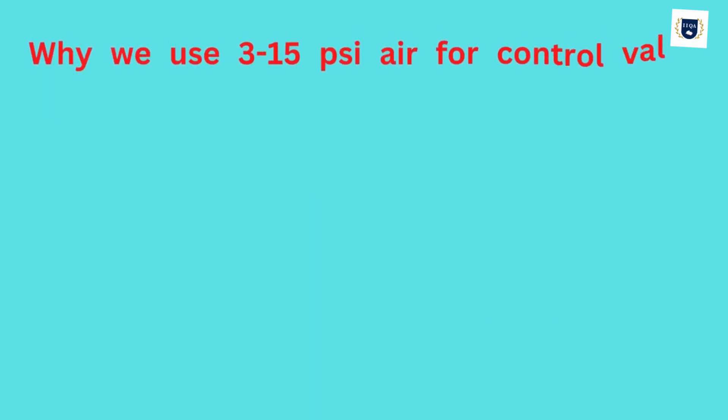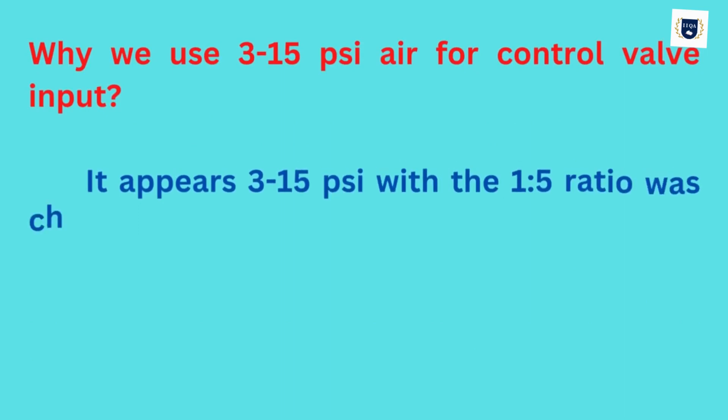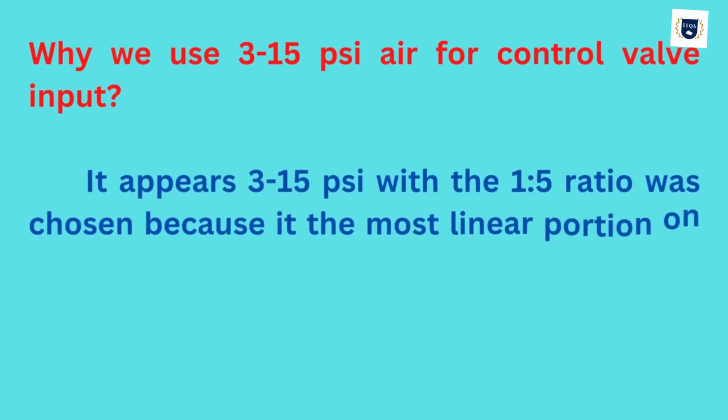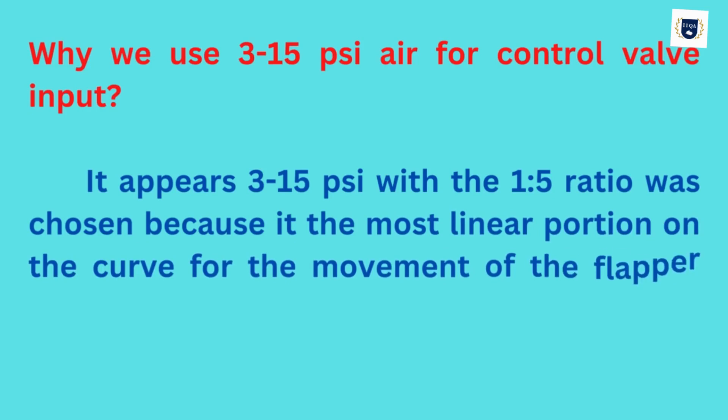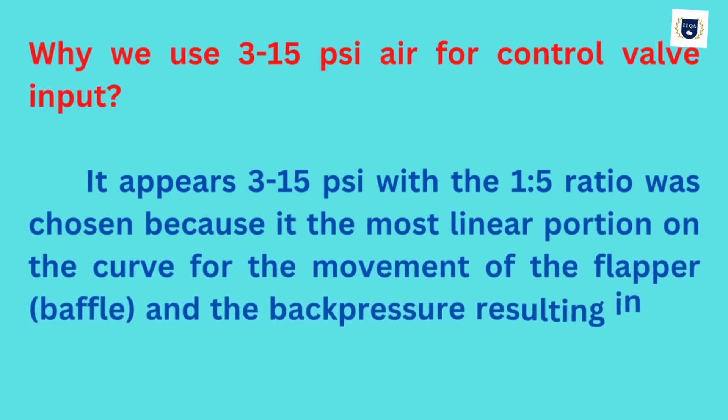Why do we use 3 to 15 psi? Air for control valve input - it appears 3 to 15 psi with the 1 to 5 ratio was chosen because it's the most linear portion on the curve for the movement of the flapper, baffle, and the back pressure resulting in the nozzle.